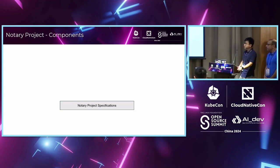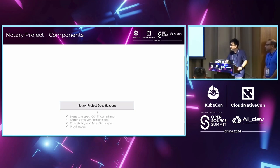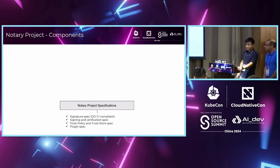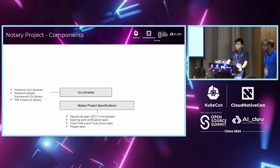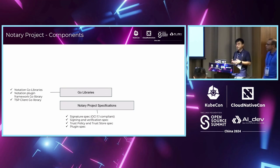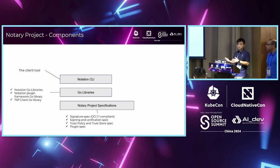In the community, we create cross-industry specifications called Notary Project specifications, including signature specification and sign-and-verify workflow specifications. You can build your own libraries and tools based on these. If you prefer not to start from scratch, we also deliver libraries you can use to build tools or services. For example, there's another open source project called Ratify that uses Notary Project tools to build a service running on Kubernetes to validate images before deployment.